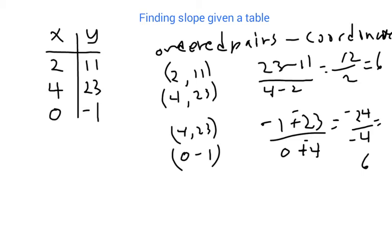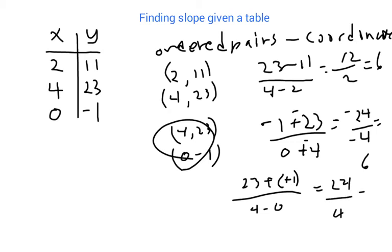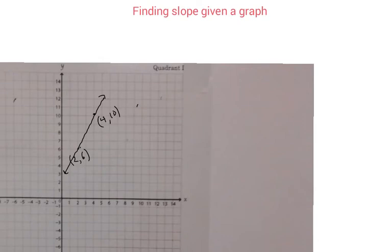If I wanted to, I'd just do it another way just to prove we're still getting the same answer. I could have done 23 minus negative 1 over 4 minus 0. You're still using this set here. This would be plus positive, and that's 24 over 4, which again is 6. So any way I do that, as long as I do the arithmetic correctly, I get the slope being 6, which it is.